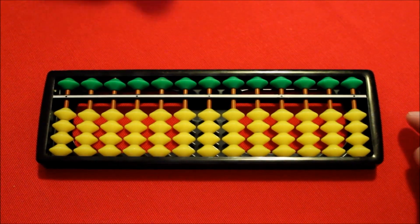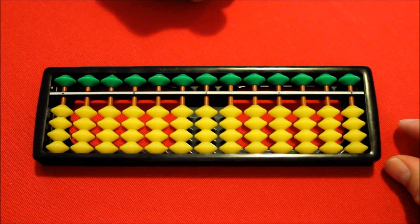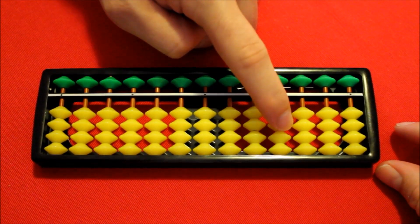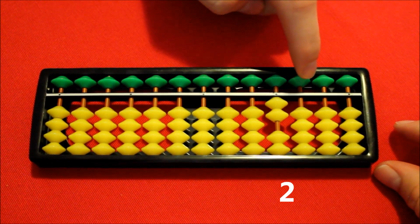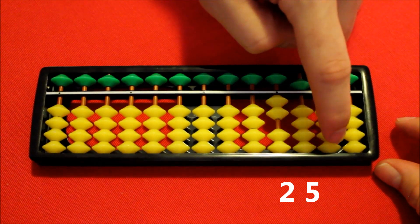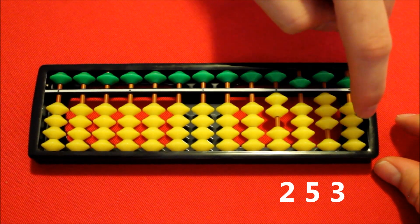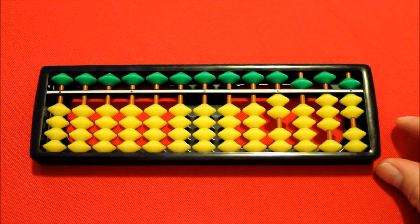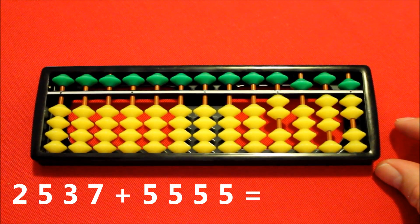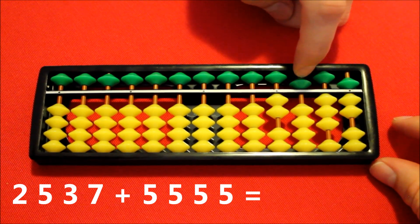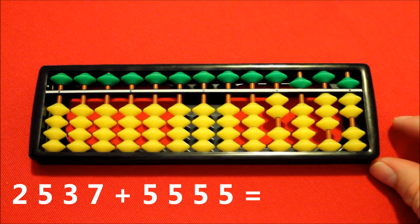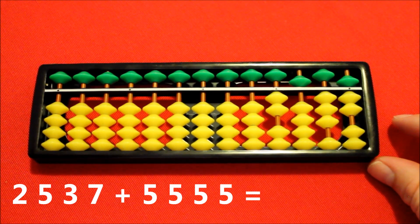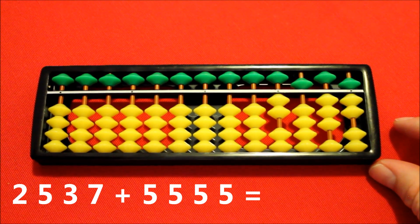Now for some practice. I'll set up a number on the Soroban, and then add a lot of fives to it. So here's the number: two thousand, five hundred, and thirty-seven. To this number, I'm going to add five thousand, five hundred and fifty-five. Sounds like quite an ambitious target, but in actual fact, all I need to do is add five to each column, and we work from left to right.